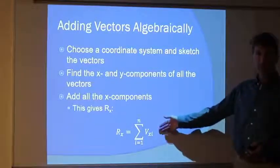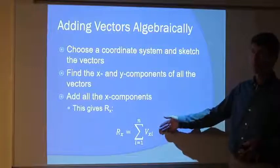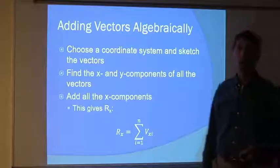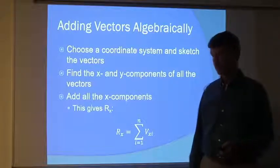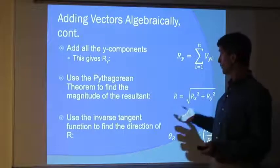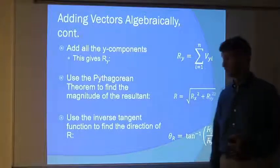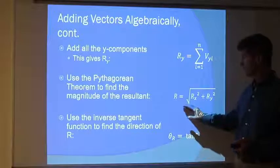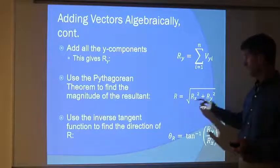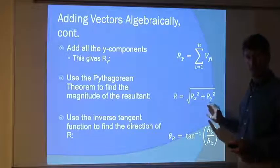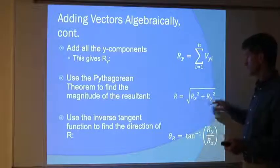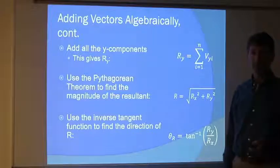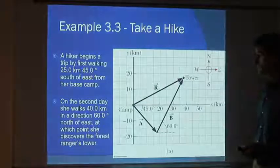So you want the x component of a resultant, just add up all the x components of all the vectors that are there. You want the y components, just add up all the y components, okay? You want the total length, take the square root of the x component squared plus the y component squared. An inverse tangent gives you the angle.